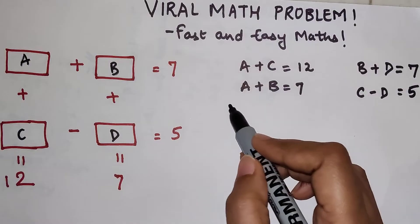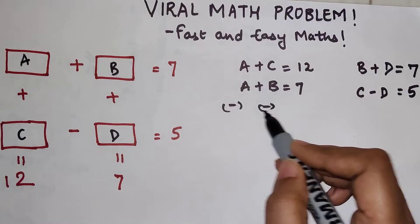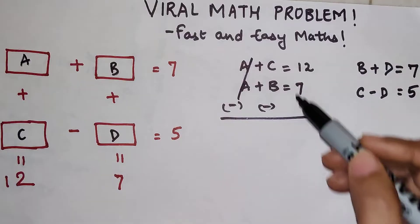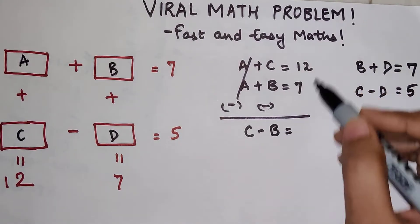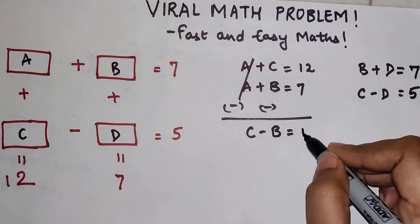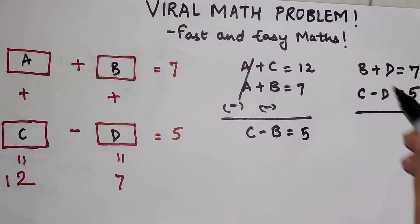...this equation. So what I get is the A's are getting cancelled and I'll get C minus B equals 12 minus 7, which gets me 5. Over here I don't need to subtract because the signs are opposite.